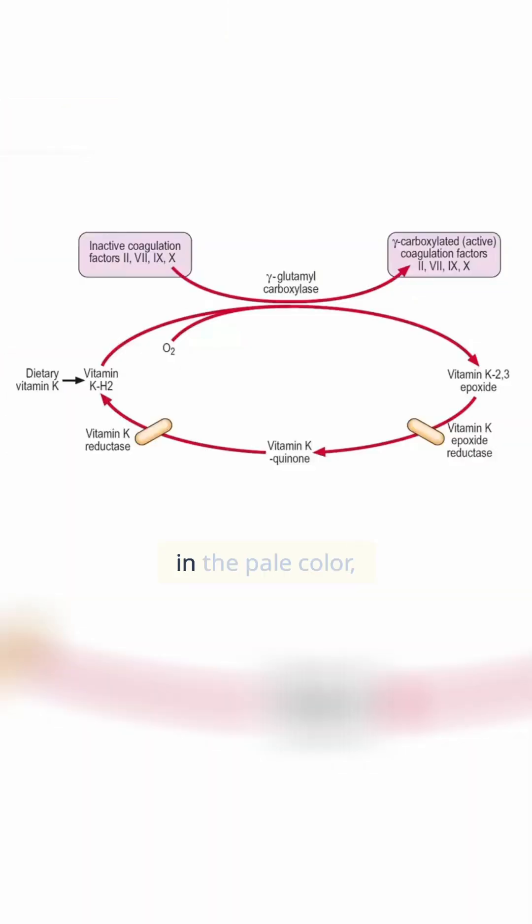On the top left, in the pale color, these coagulation factors are initially inactive after they've been synthesized by the liver, and they need to undergo something called gamma-glutamyl carboxylation.